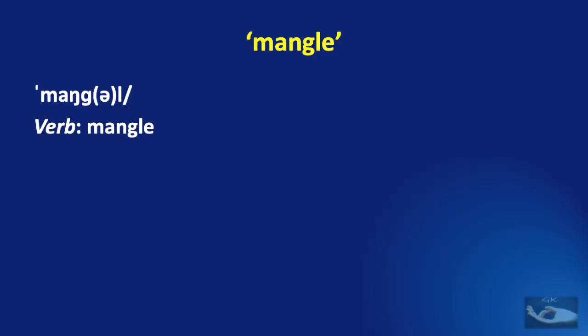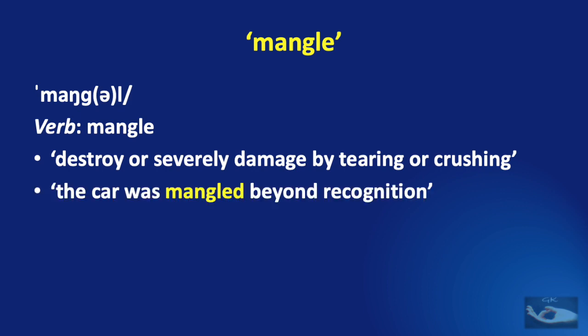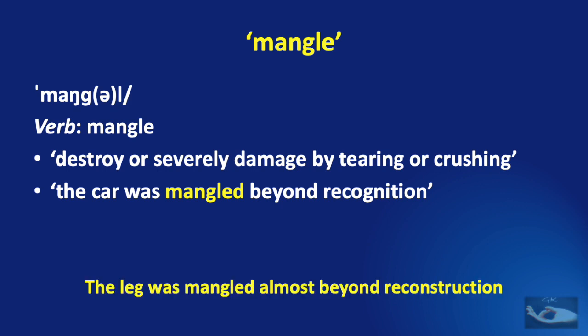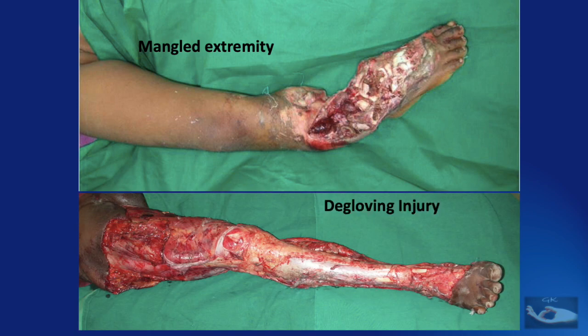First, let us understand the meaning of the word 'mangle'. The dictionary states that the verb mangle means to destroy or severely damage by tearing or crushing. So the noun mangle means something that is destroyed or severely damaged. For instance, the car was mangled beyond recognition, and similarly, the leg was mangled almost beyond reconstruction. This is a mangled lower extremity, whereas this is a degloving injury — it is not a mangled injury.